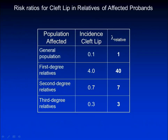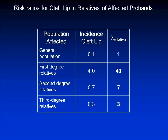Here are risk ratios for cleft lip in relatives of affected probands. In the general population, lambda-r is 1. Lambda-r for first degree relatives is 40. It decreases in second degree relatives and decreases further in third degree relatives. This data indicates cleft lip shows strong familial aggregation.